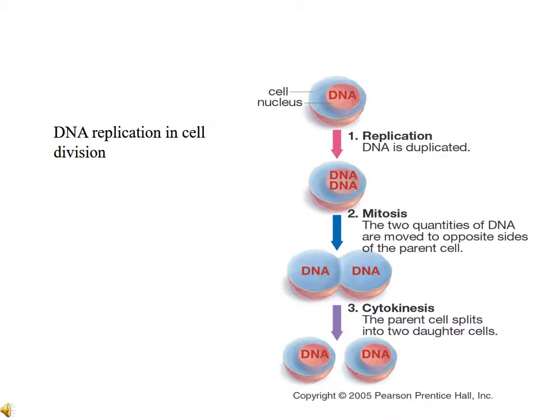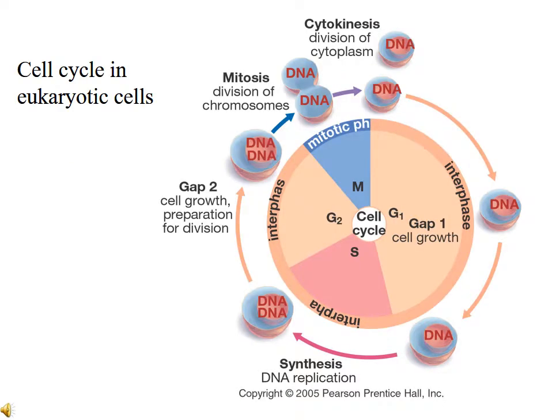Let's go back to the process of DNA replication and cell division. A cell gets ready to divide, the DNA divides into two identical molecules, mitosis takes place, two DNA molecules split into two new cells, and then cytokinesis forms two new cells. Let's put this into a broader perspective with what we refer to as the cell cycle in eukaryotic cells — cells that have a nucleus, complex organelles, and structure, as opposed to a prokaryotic cell. The cell cycle can be broken down into three parts.